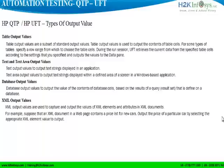The next kind is called the text and the text area output values. The text output value is used to capture any string which is generated by the application. The text area output value is used to capture any string within a specified defined area of your screen. The next kind is called the database output value. Database output values are used to capture the contents of database cells based on the results of a query that is defined on a database.